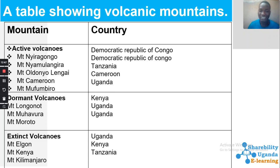Extinct or dead volcanoes are mountains which erupted long ago and can no longer erupt. Extinct volcanic mountains include Mountain Elgon in Uganda, Mountain Kenya in Kenya, and Mountain Kilimanjaro in Tanzania. You are going to describe how a volcanic mountain is formed and give examples of extinct mountains in Uganda and Kenya.